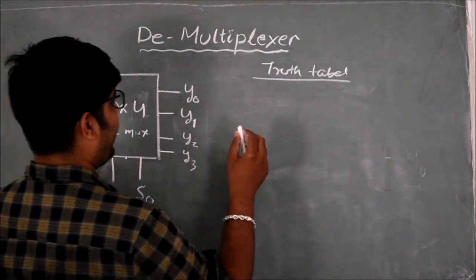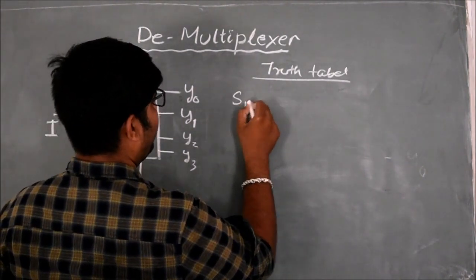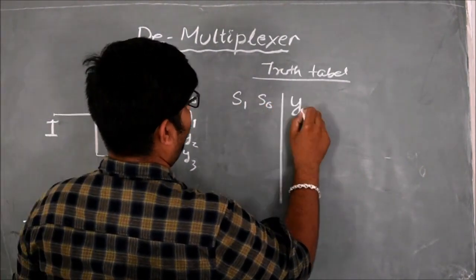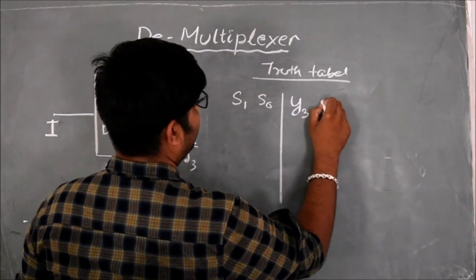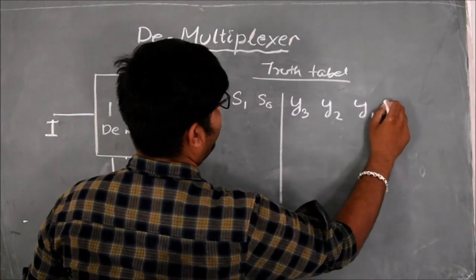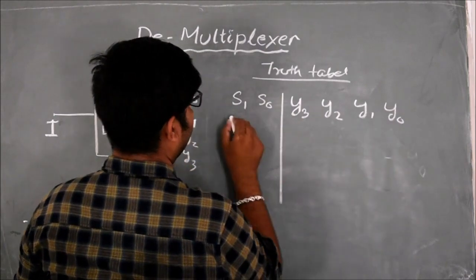If we try to develop the truth table of this demultiplexer, we can find S1, S0, Y3, Y2, Y1, and Y0.